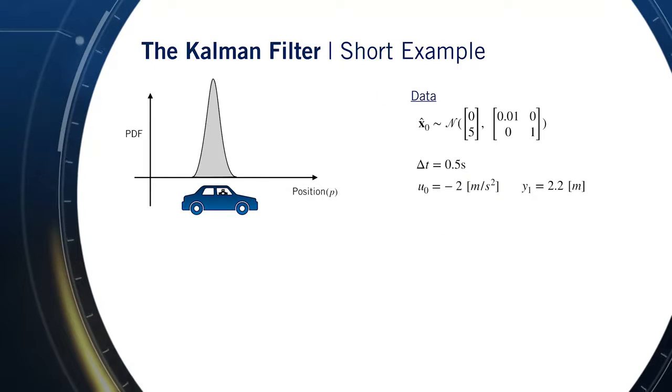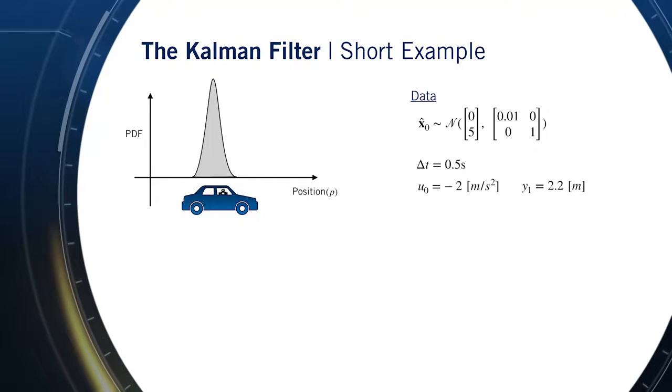Given this initial estimate and our data, what is our corrected position estimate after we perform one prediction step and one correction step using the Kalman filter? Here's how we can use these definitions to solve for our corrected position and velocity estimates.